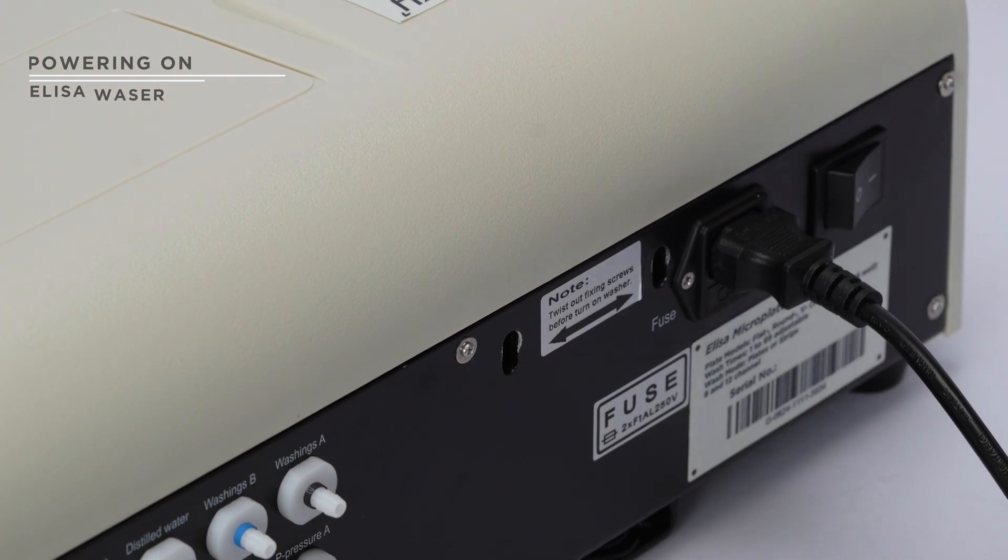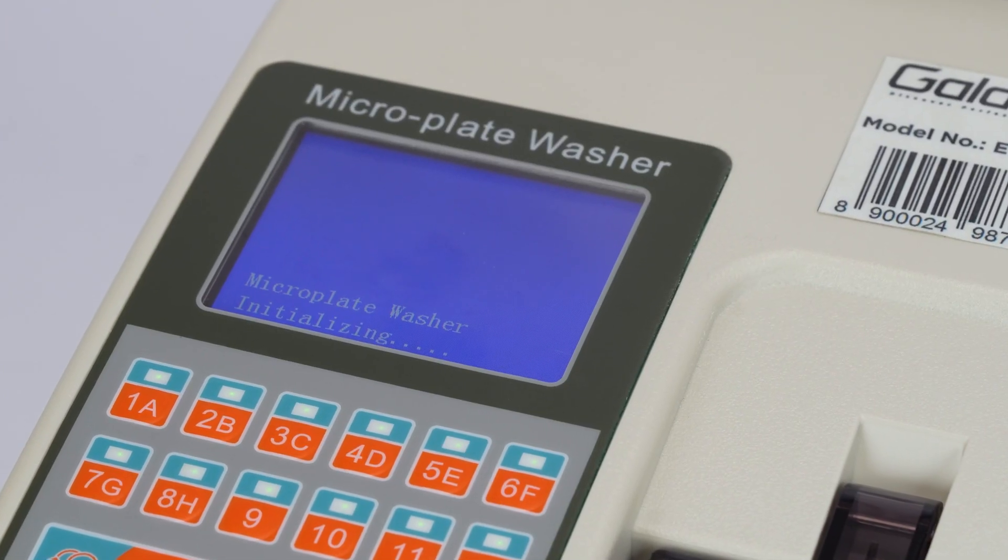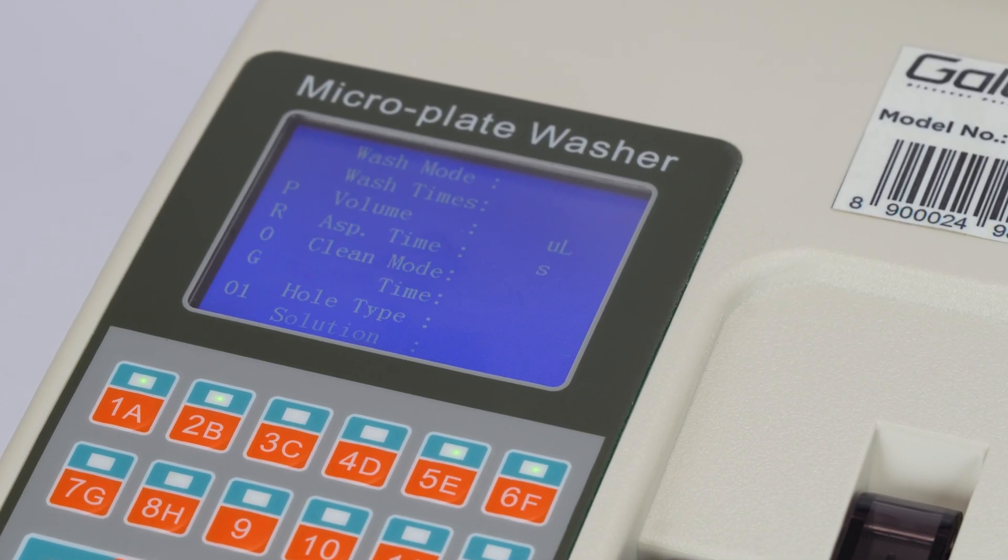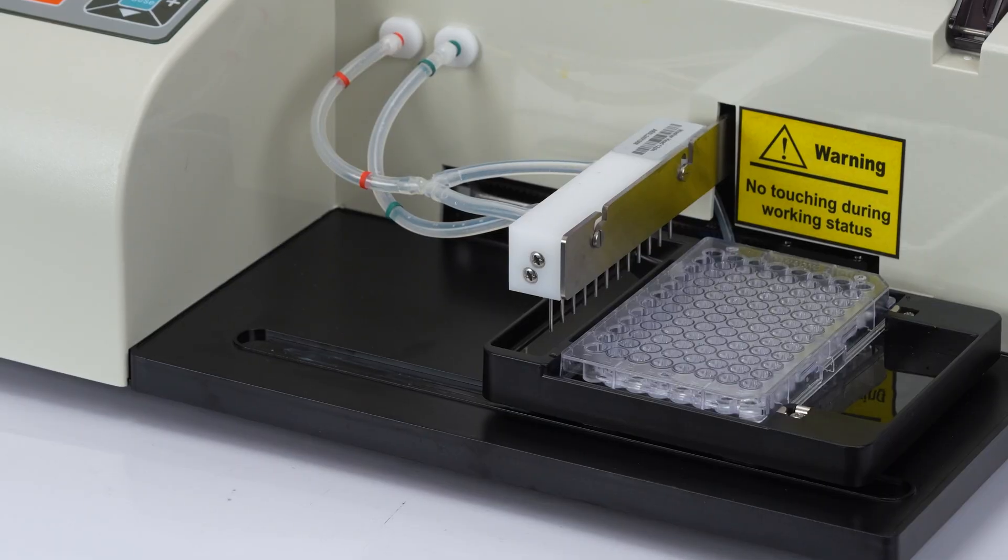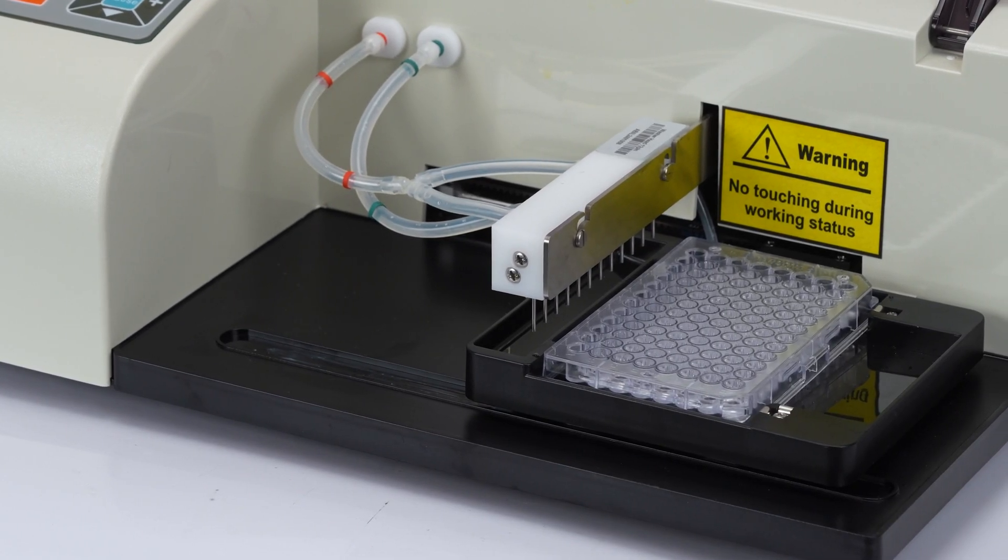Turn on the power switch. Once the machine is on, it will undergo self-initializing. Next, set the washer head position and adjust the settings for your microplate.